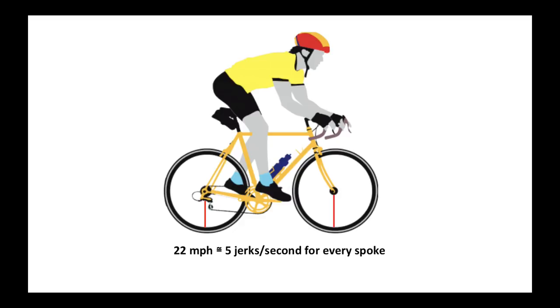If I'm riding a bike at 22 miles per hour, every spoke in the wheel is going to get jerked about five times every second.